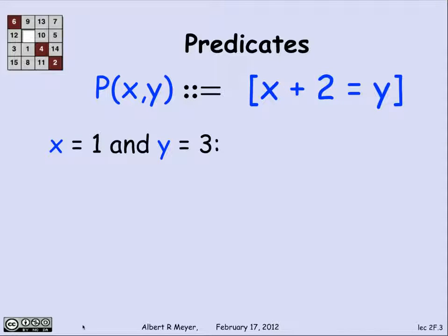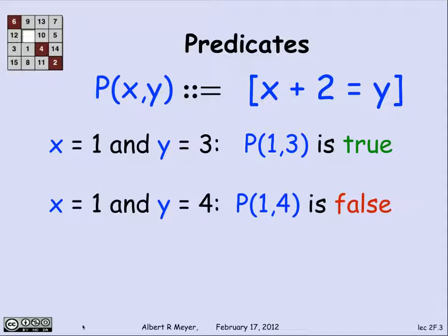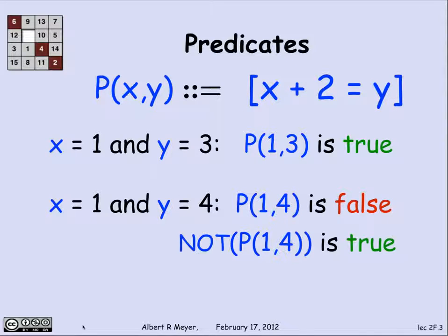In order to figure out whether or not a predicate is true, I need to know the values of the variables — in this case x and y. So if x is 1 and y is 3, then P(1,3) is true because 1 plus 2 is equal to 3. If x is 1 and y is 4, then since 1 plus 2 is not equal to 4, P(1,4) is false. And since P(1,4) is false, not P(1,4) is true.